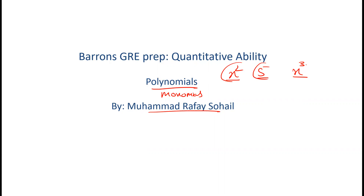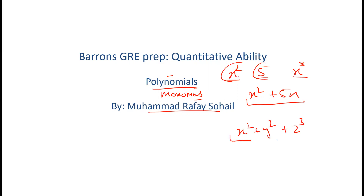Five is a monomial. Now x squared plus 5x — this is a binomial. A monomial is also a polynomial; a binomial is also a polynomial. A polynomial can be a monomial or it can be a sum of two or more monomials. So x squared plus y squared plus z cubed is also a polynomial — it is actually a trinomial, and it can also be called a polynomial because it is a sum of two or more monomials.